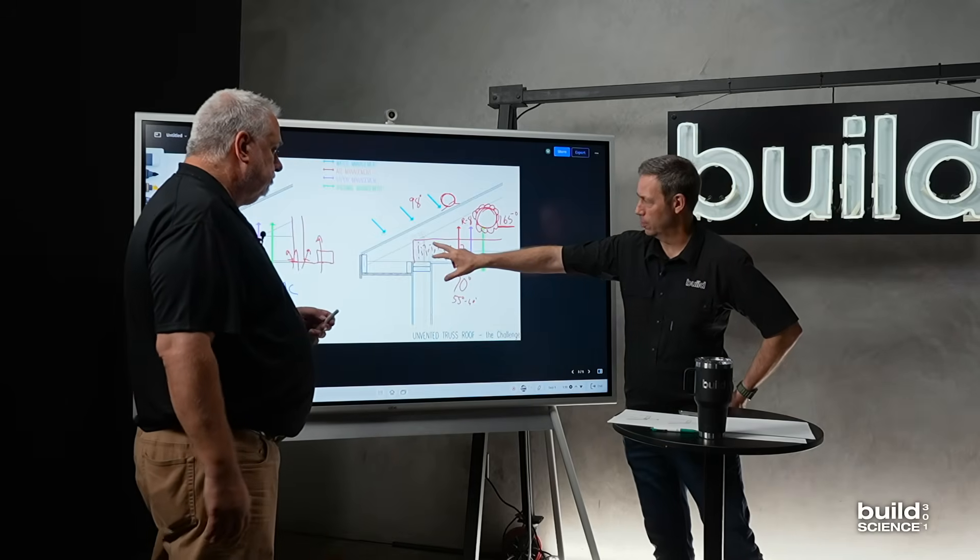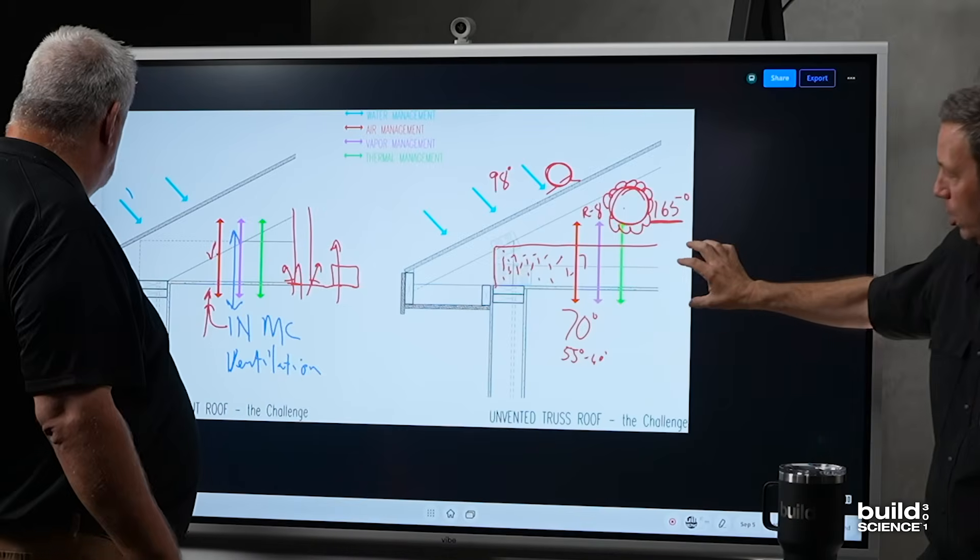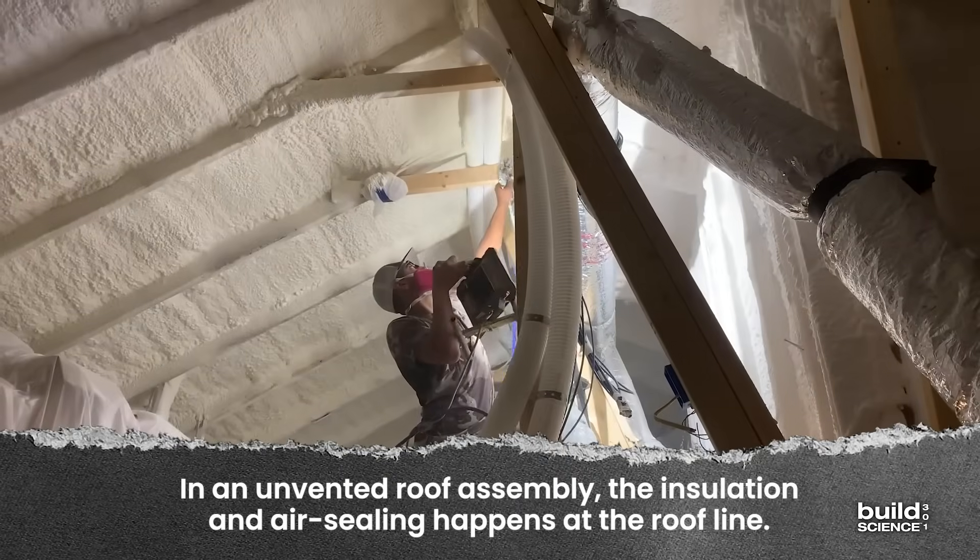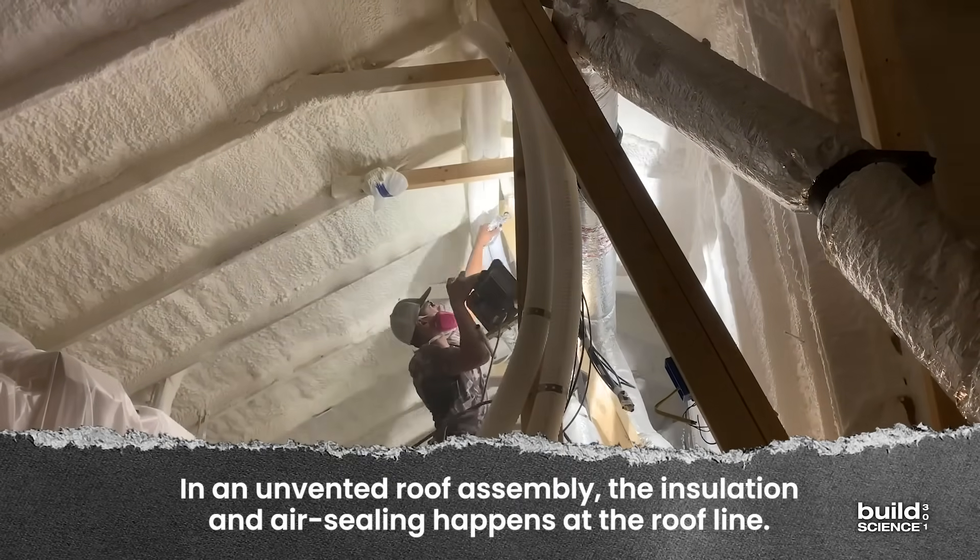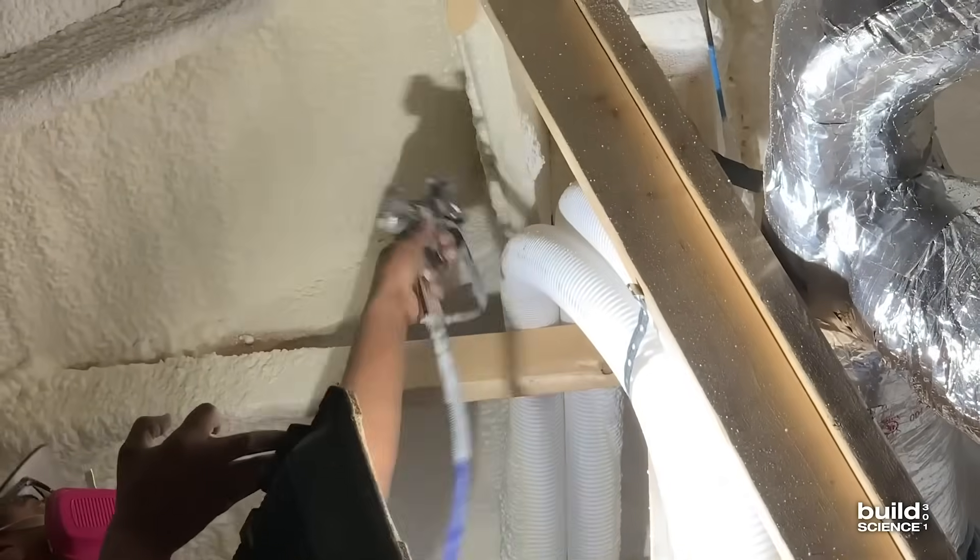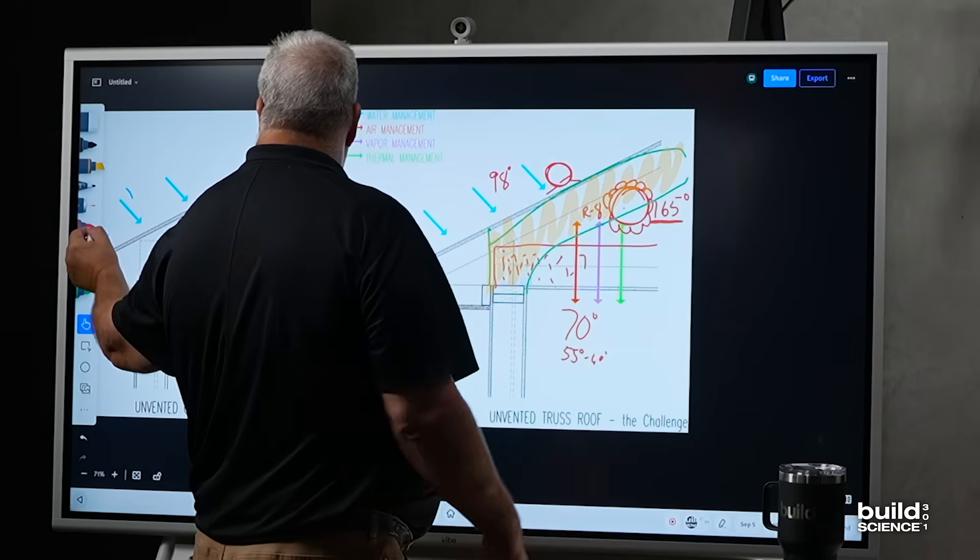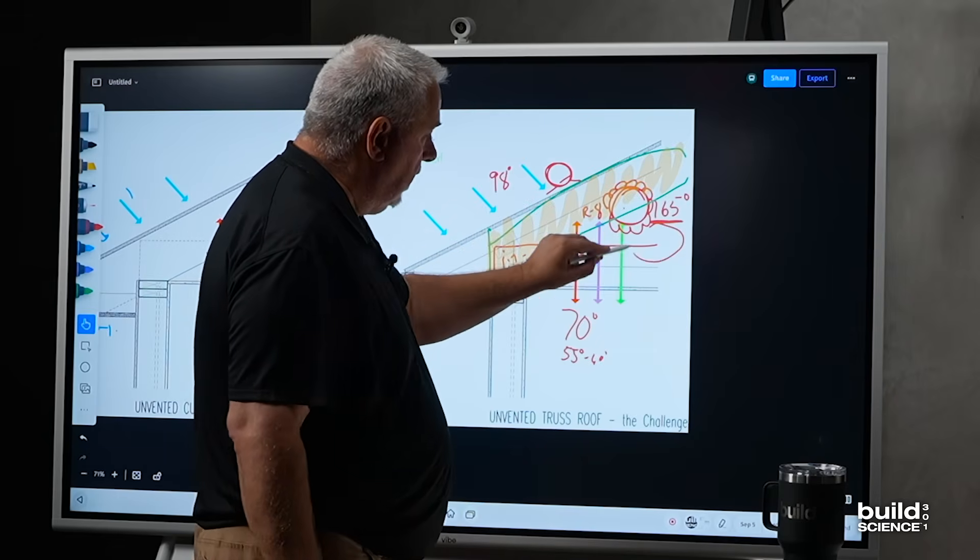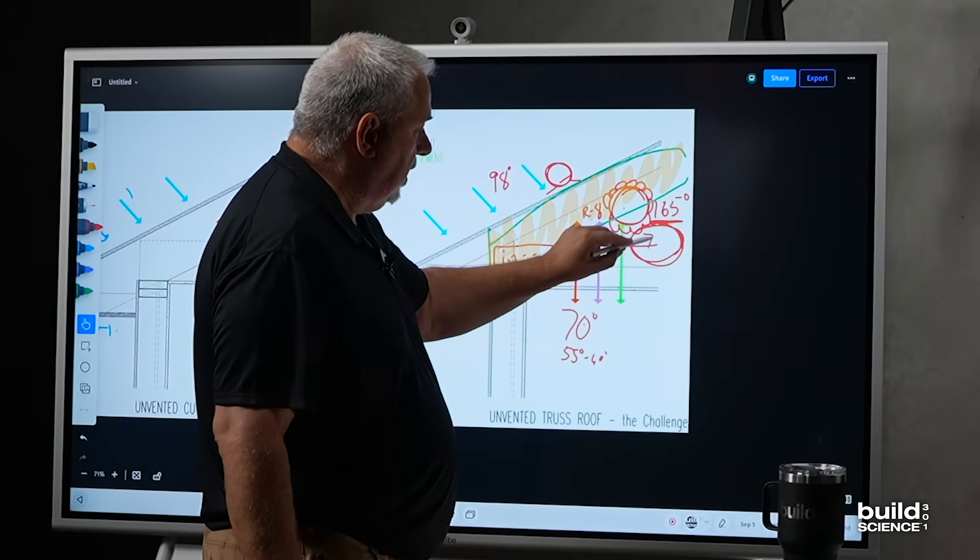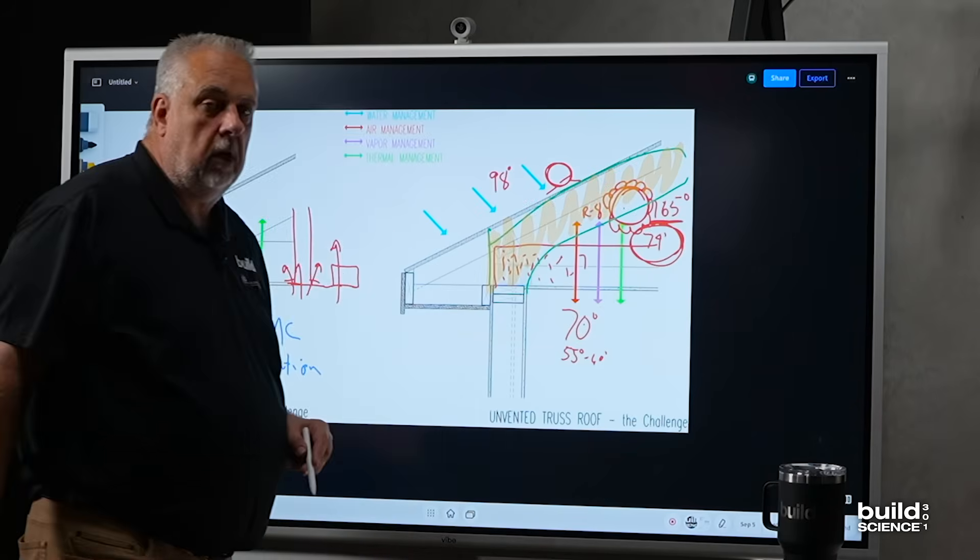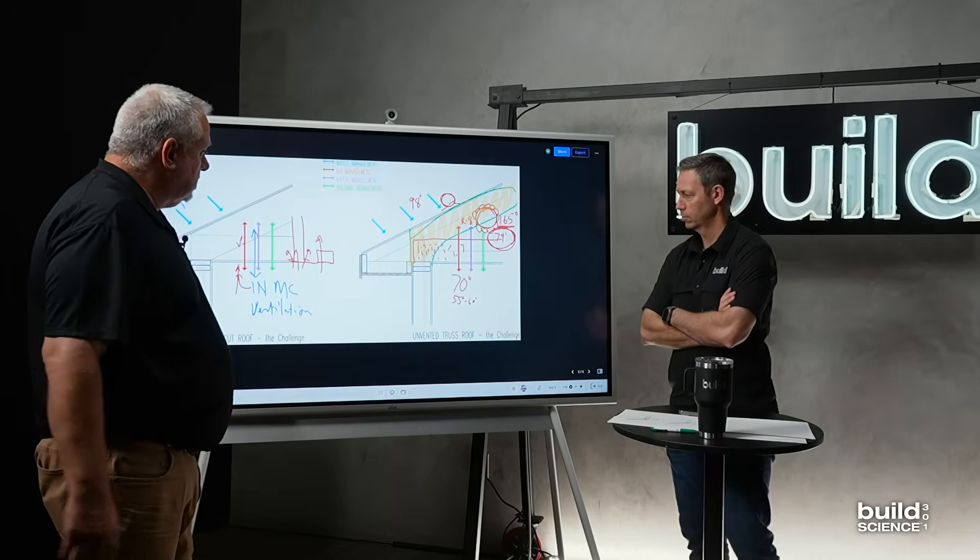Then an unvented roof assembly, instead of this insulation here at the drywall, we're actually talking about insulation at the roof line. We probably want to do something like that, where all of this is our insulation. Now, when I put that duct in and I put it in here, it's not 165. It might be 74 degrees up there. Far better system.